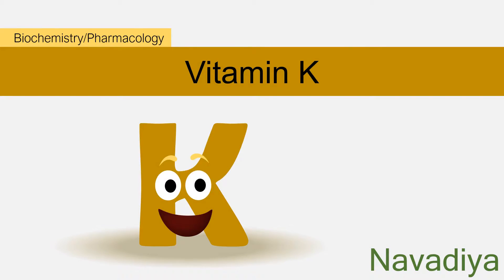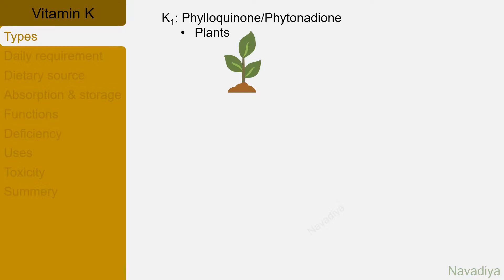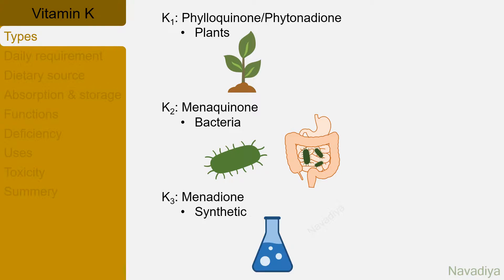In this video we will see vitamin K. It's a fat-soluble vitamin. There are 3 types of vitamin K. K1, also called phyloquinone and phytonodione, is synthesized by plants. Vitamin K2 is also called menaquinone and it is synthesized by bacteria. Common colonic bacteria in your intestine also synthesize vitamin K2. K3 is called menadione — it's a synthetic analog and it's water-soluble.